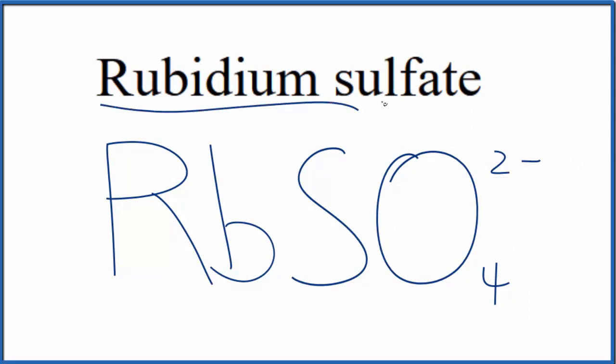So rubidium, that's a metal, and sulfate, that's a polyatomic ion, a group of nonmetals. So this is an ionic compound. We need to think about the charge.